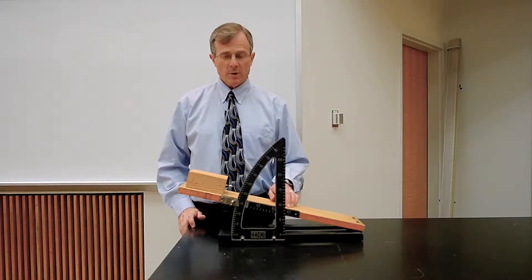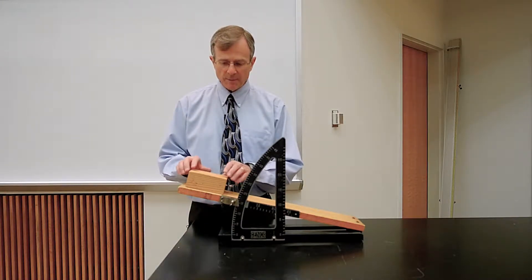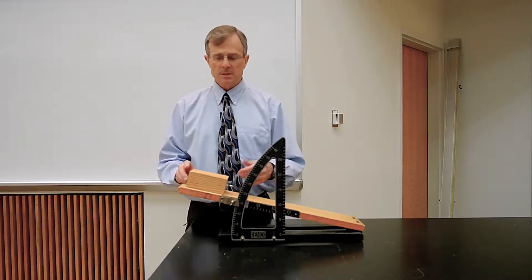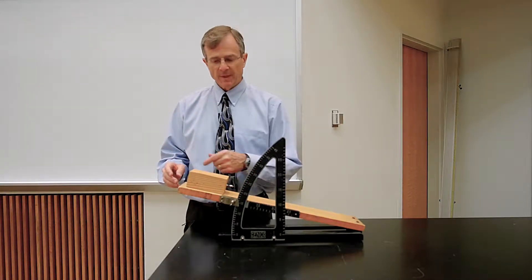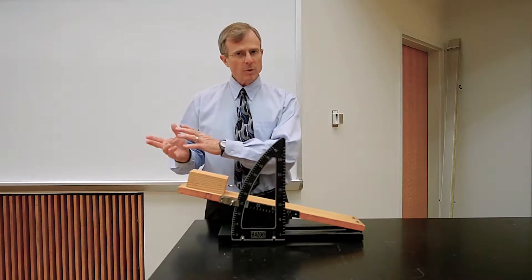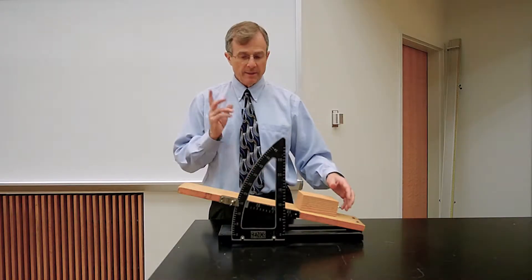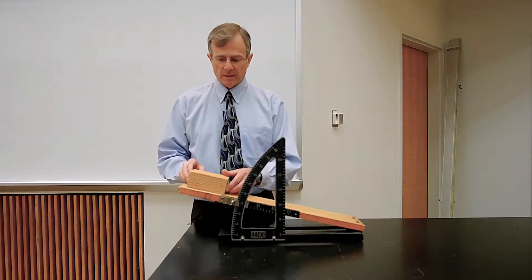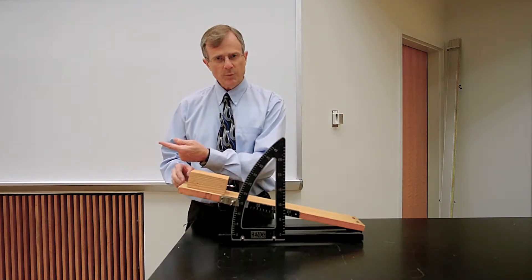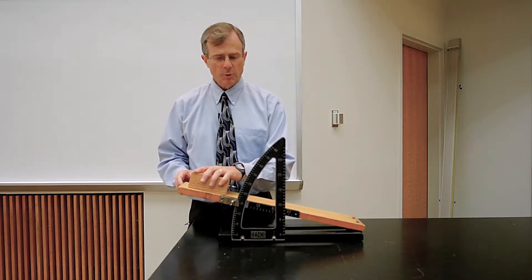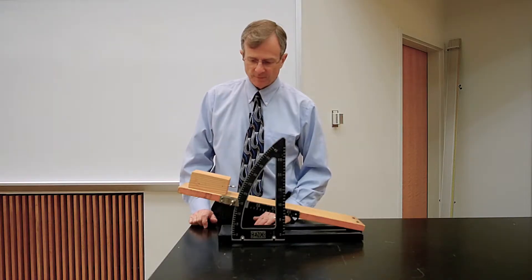And we have one more force, which is stopping this block from sliding down the plane. It's the static friction force that stops it from sliding. If there were no friction, the block would slide down the plane. And that tells me that the friction force must be in the direction opposite the direction it would move if there were no friction.